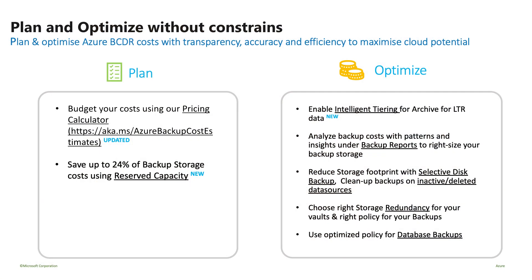Now that we're done with the demo, let's cover cost optimization. You can leverage pricing calculators which provide a granular item-level view to understand your costs. We also provide support for reserved capacity — with pre-committed usage, you get up to 24% savings on backup costs. We also have intelligent tiering where you can configure backups to automatically move to the archival tier for long-term retention after a few months. Backup reports provide great insights and can help right-size your backup storage. You can also clean up backups to remove inactive or deleted data sources.